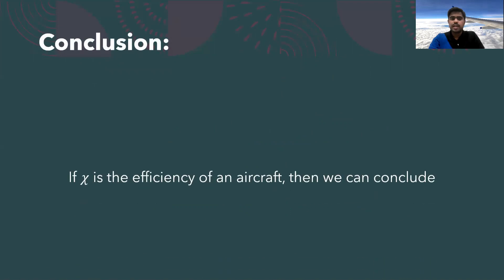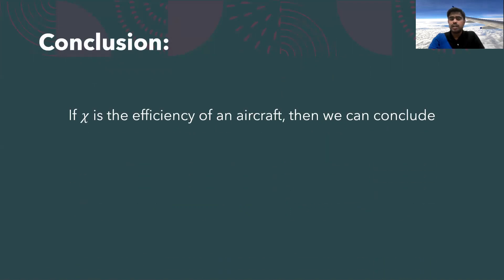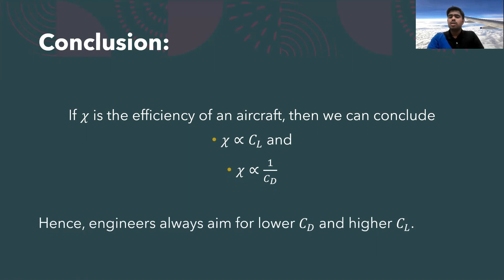So the conclusion is that if Chi is the efficiency of an aircraft, then we can conclude that Chi is directly related to the lift coefficient and is inversely related to the drag coefficient. So engineers always aim to lower the value of CD and increase the value of CL. As you know, we can increase the value of CL by modifying the wings. You can see that different aircrafts have different wing structures in order to make it more and more efficient.